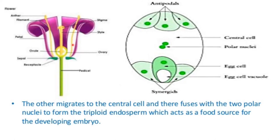Entering the embryo sac via one of the synergids, a pore forms in the pollen tube wall through which a small amount of cytoplasm is released along with the two sperm nuclei. One sperm migrates to the egg cell and fuses with the egg nucleus to form a diploid zygote, which develops into the embryo. The other migrates to the central canal and fuses with the two polar nuclei to form a triploid endosperm, which acts as a food source for the developing embryo.